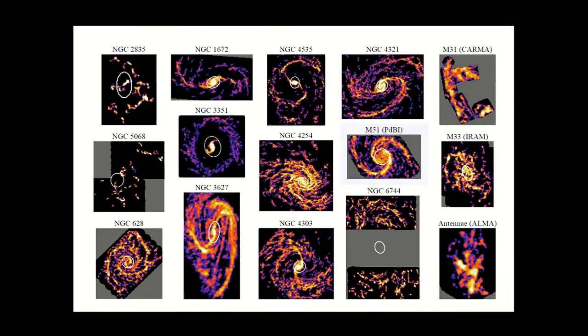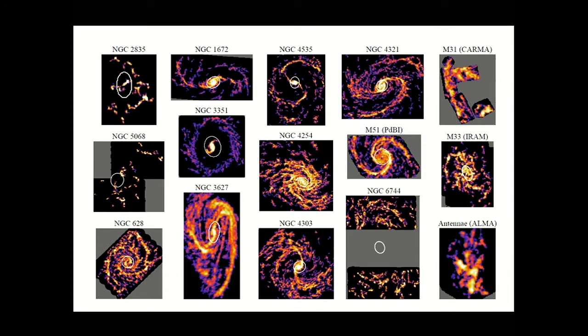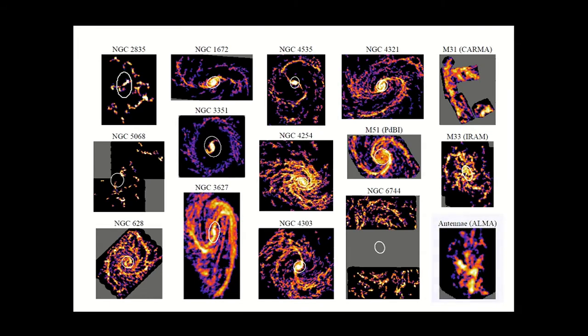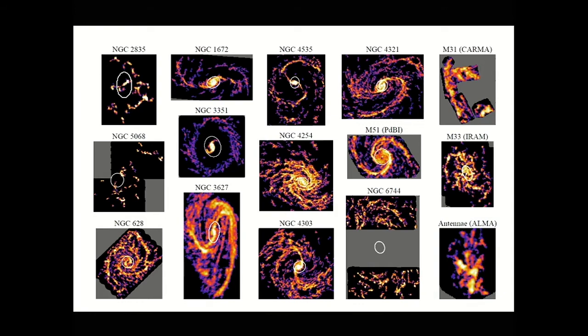These include M51, a grand design spiral galaxy, M31, a high-mass early-type spiral galaxy in the local group, M33, an intermediate-mass dwarf spiral galaxy also in the local group, and the antennae galaxies, the nearest major merger pair.